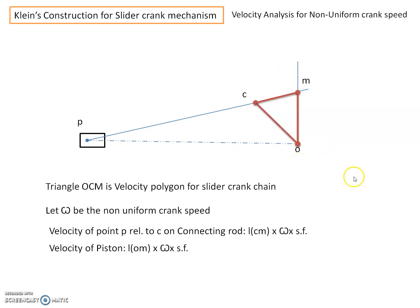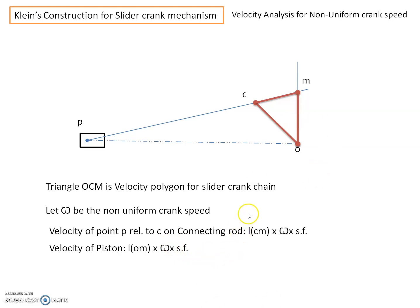Triangle OCM represents the velocity polygon for this mechanism. We will extract the unknown velocities from this velocity polygon OCM. Consider omega as the speed of the crank. Velocity of P relative to C on the connecting rod is given by the product of length of vector CM, the crank speed omega, and the scale factor. Velocity of piston P is given by the length of vector OM multiplied by crank speed omega and the scale factor.